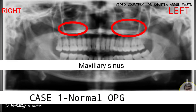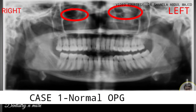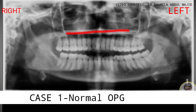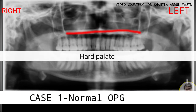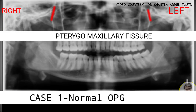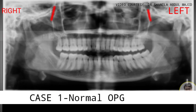Then we move on to the maxilla. In the maxilla we have the maxillary sinus, then the floor of the maxillary sinus, and above the maxillary sinus is the orbit — you see the floor of the orbit. You can also see a radiopaque outline seen bilaterally, which is the hard palate. You might also see the pterygomaxillary fissure, which is visible in this case.